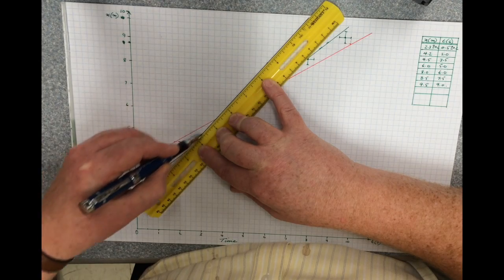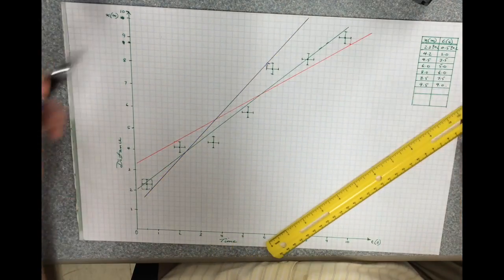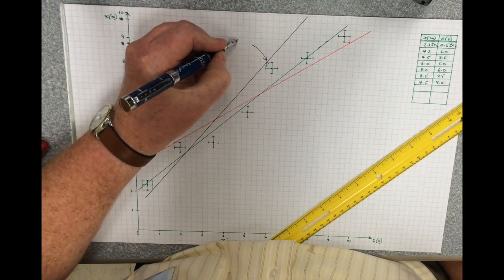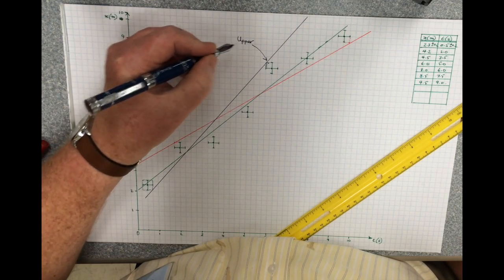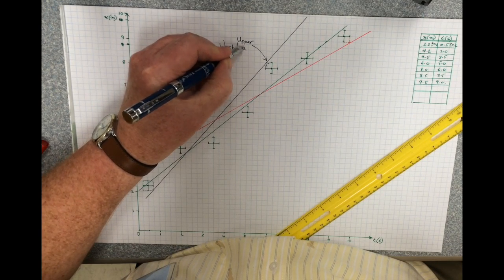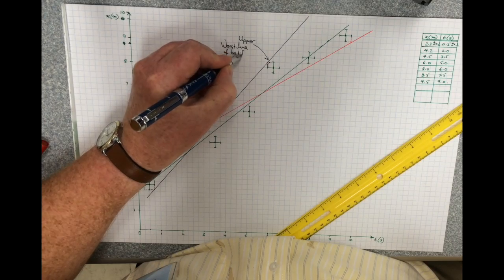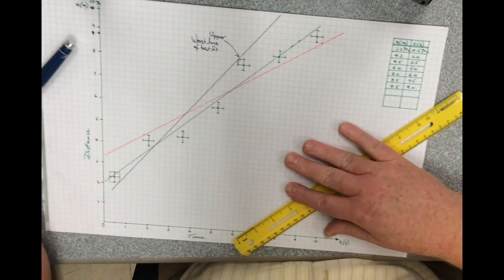In this case, I now do that and I have now what I call... This is the upper worst line of best fit.